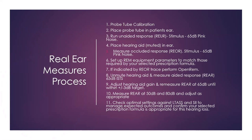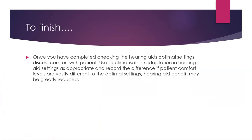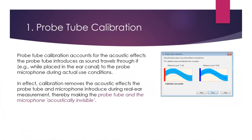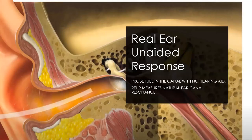I have a step-by-step in a video, so I'll go over each step individually first. The first step is probe tube calibration. The probe tube is what you put into the ear, and you want to make sure that it is acoustically invisible — that's the purpose of the calibration. You need to do a calibration for every probe tube that you use, so you do it every time.